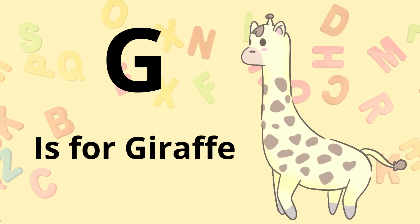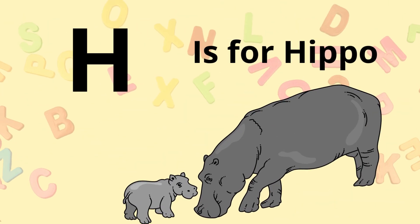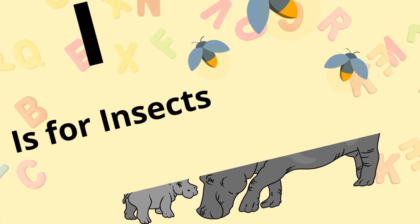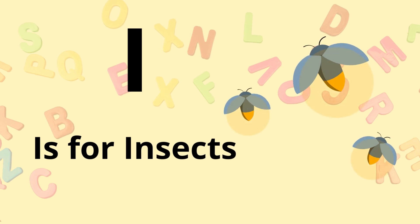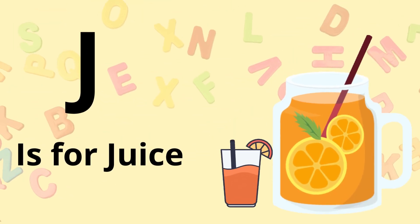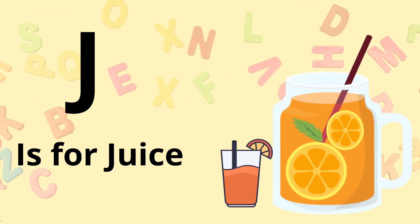G is for Giraffe. H is for Epon. I is for Insect. J is for Juice.